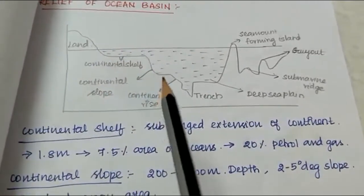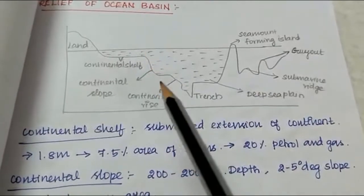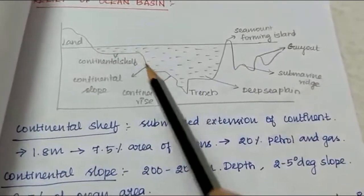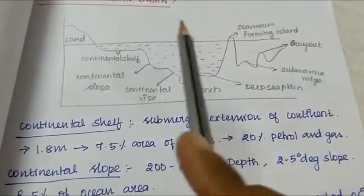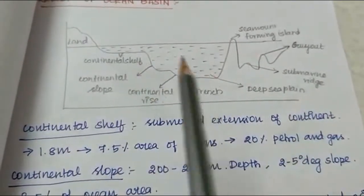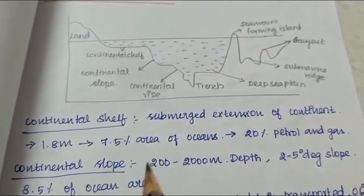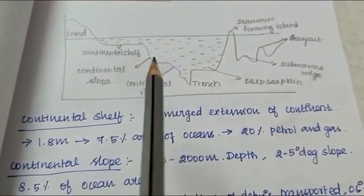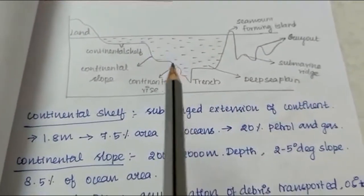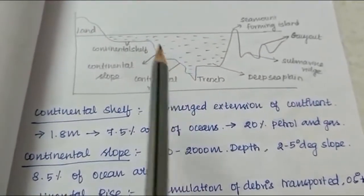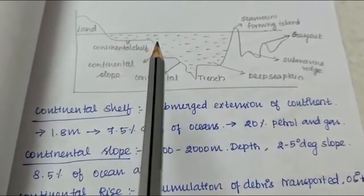The continental slope is about 200 to 2000 meters depth. The slope is 2 to 5 degrees. We have 8.5% of ocean area in the continental slope. Then we have the continental rise.